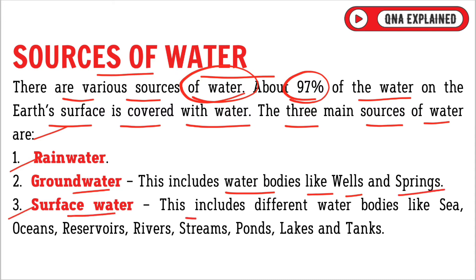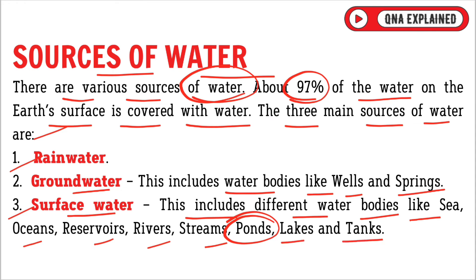Surface water includes different water bodies like seas, oceans, reservoirs, rivers, streams, ponds, lakes, and tanks.